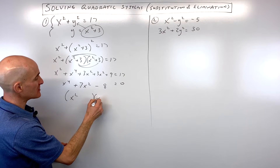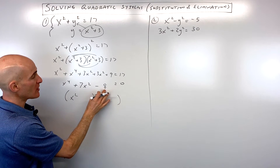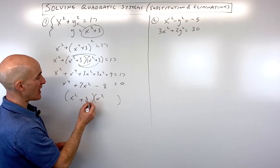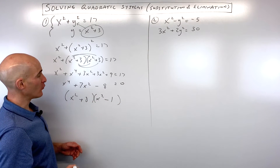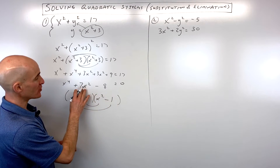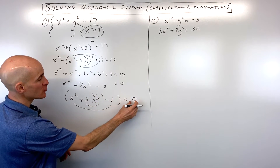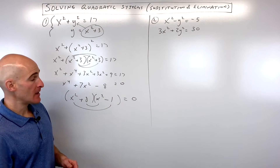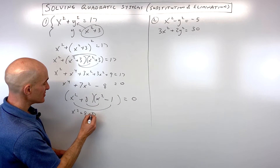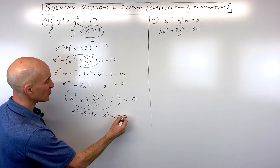It factors to x squared times x squared, which gives us x to the fourth. What two numbers multiply to negative 8 but add to 7? That's positive 8 and negative 1, because 8x squared and negative 1x squared is positive 7x squared. Now we set each group equal to zero and solve: x squared plus 8 equals zero, and x squared minus 1 equals zero.